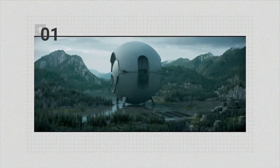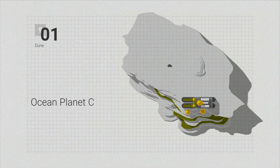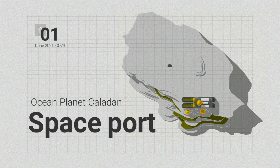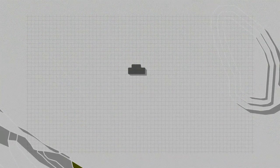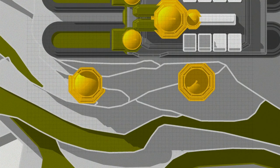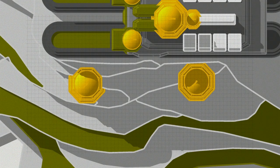The first one is the spaceport in the ocean planet Caladan. There's the terminal building and there's the greeting platform. Also, you can see two hexagon-shaped towers in the cliffside here.